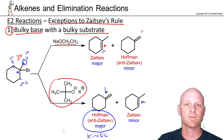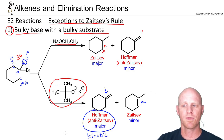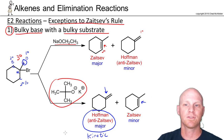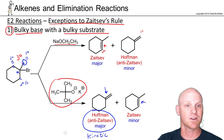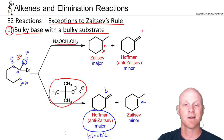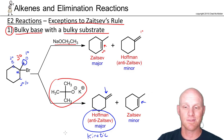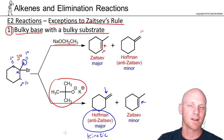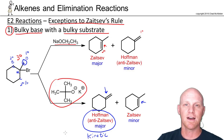This often gets oversimplified in one of two ways, and you want to find out which way your professor uses. Usually we just say that with a bulky base you always get the Hoffman as the major and the Zaitsev as the minor. The other oversimplification is to say with tertiary halides you get the Hoffman as the major, and with secondary halides you still get the Zaitsev as the major. Pay close attention to which method your professor uses — the first is much more common.